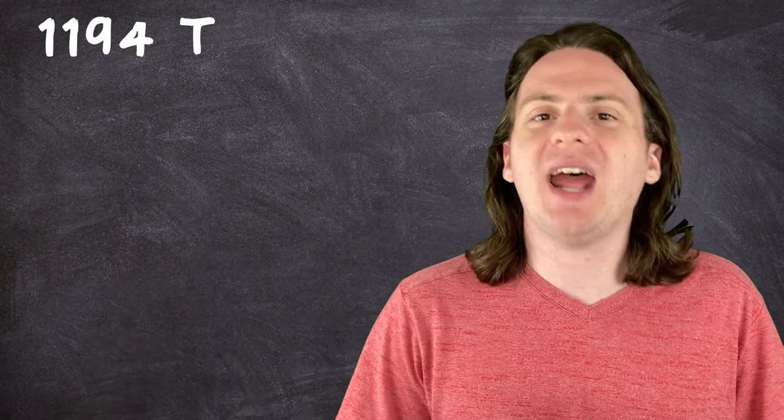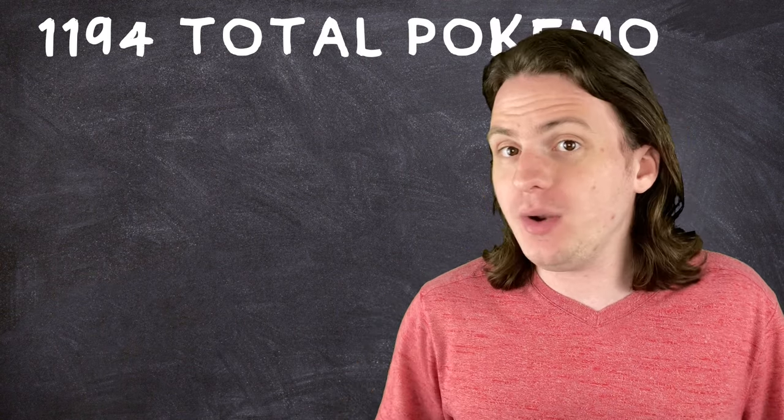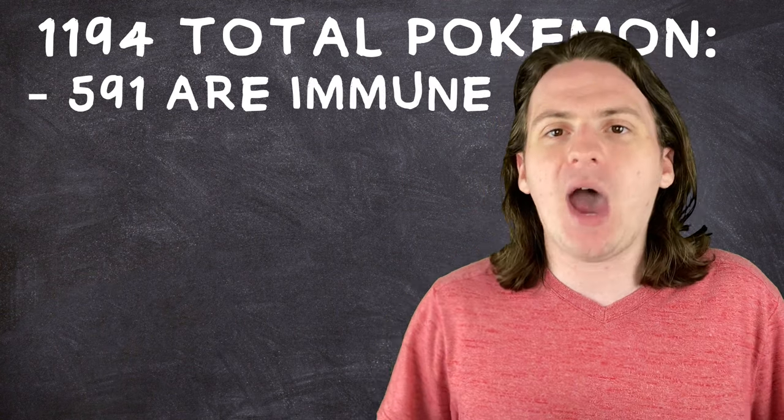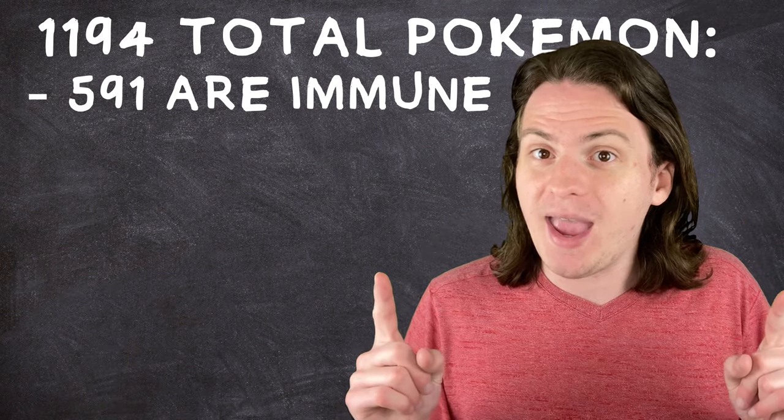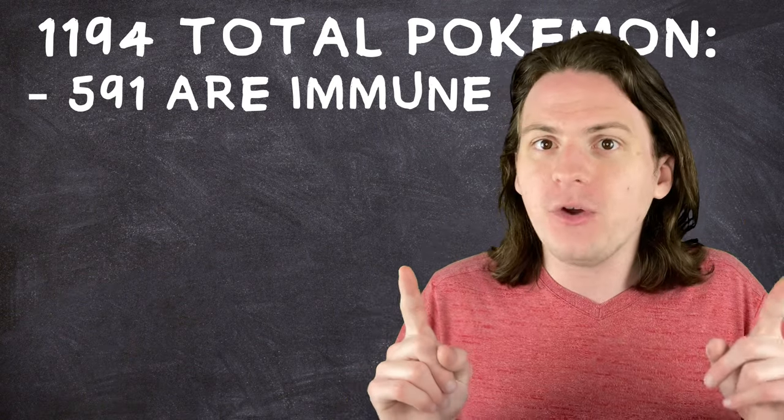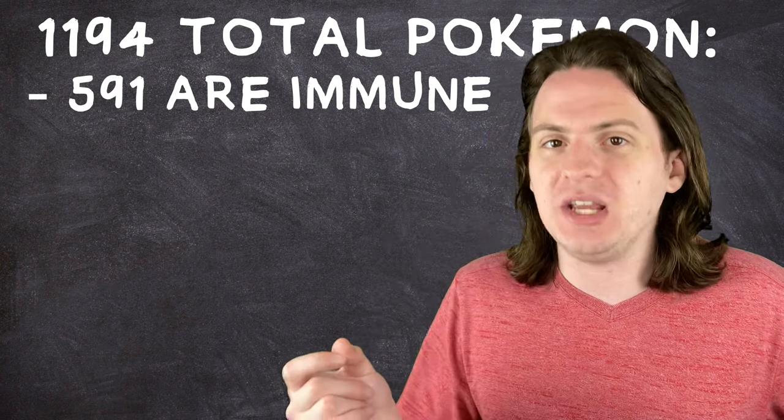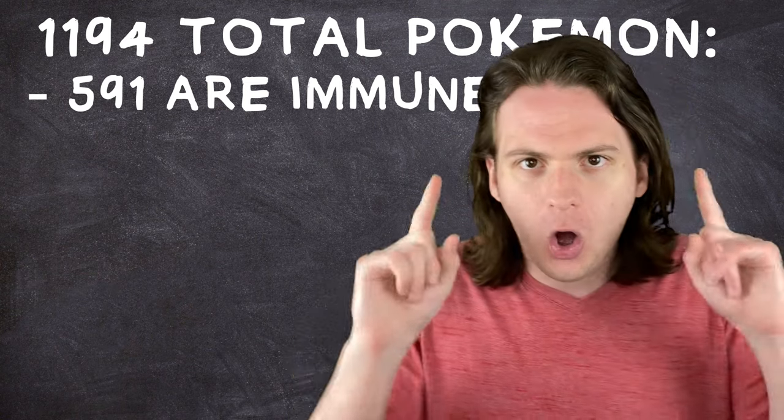Because so many types resist or are flat out immune to this attack, nine times out of ten when you use it, they're probably going to eat it like it's a bowl of cinnamon toast crunch. That's not an exaggeration, by the way. I did the math. Let's break it down. Of the 1,194 Pokemon currently in the game, including different forms and stuff, 591 Pokemon will be flat out immune to this attack. That's just shy of half of every Pokemon in the game. And that's not even counting Pokemon that gain immunities through their abilities or anything, so it could very well be higher. So already, if you're using this attack, you've got, at best, a coin toss chance of doing literally nothing.